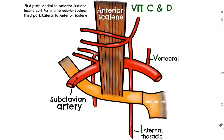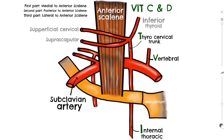Next is the thyrocervical trunk — it's called a trunk because it's short and has branches of its own. The 'thyro' part refers to the inferior thyroid artery, which supplies the posterior and inferior aspects of the thyroid gland. The 'cervical' part refers to the superficial cervical artery, also known as the transverse cervical artery, which horizontally passes over the anterior scalene through the posterior triangle of the neck until it reaches levator scapulae, where it branches into deep and superficial branches. The third branch of the thyrocervical trunk is the suprascapular artery, which extends along the inferior belly of the omohyoid to supply the scapular muscles around the back.